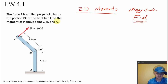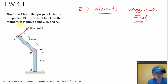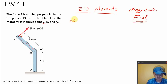So we know this is what we're dealing with. The problem says the force P is applied perpendicular to the portion BC of the bent bar. Here's the portion BC. Force P is perpendicular to that. Find the moment of P about point C, about B, and about A. So three parts to this. Let's start out with point C.